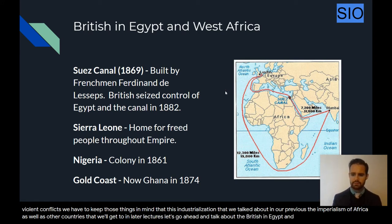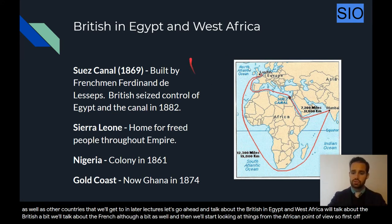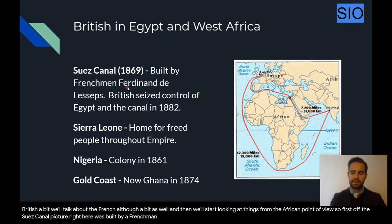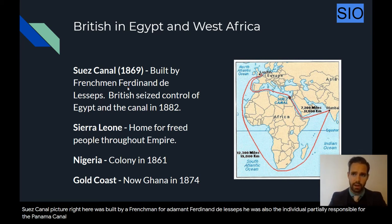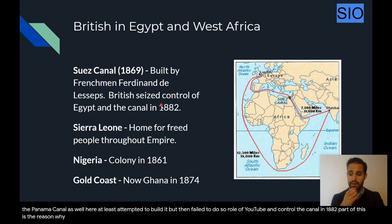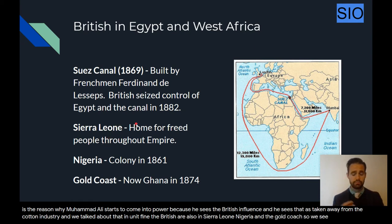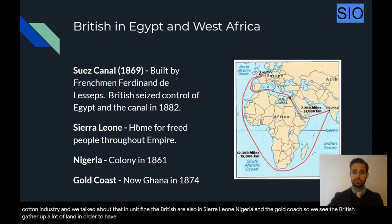Let's talk about the British in Egypt and West Africa. The Suez Canal was built by Frenchman Ferdinand de Lesseps, who also partially attempted to build the Panama Canal. The British are going to seize control of Egypt and control the canal in 1882. Part of this is why Mohammed Ali comes into power, seeing British influence taken away from the cotton industry. The British are also in Sierra Leone, Nigeria, and the Gold Coast, gathering up land to have access to resources and this major trade route through the Suez Canal.